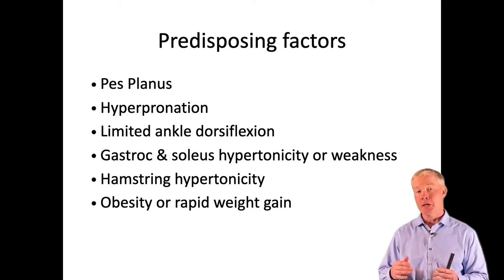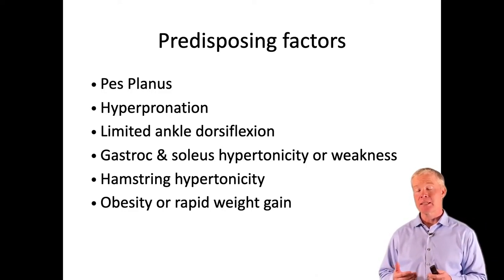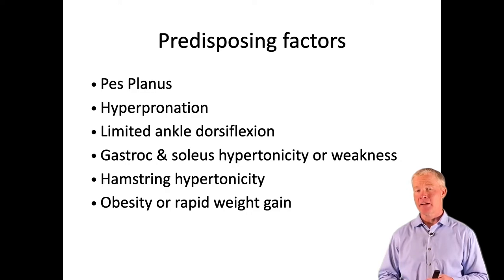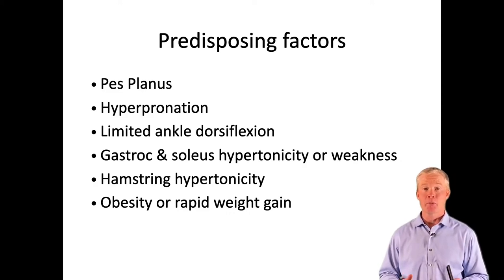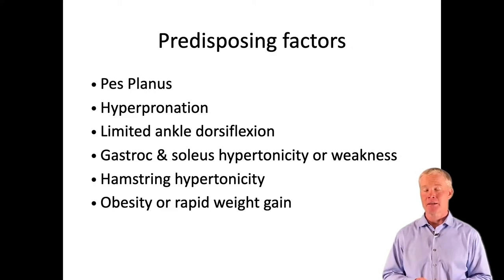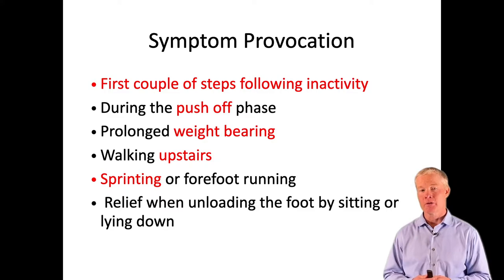Hamstring hypertonicity is another predisposing factor, not only for plantar fasciitis but for many conditions in the lower chain. Certainly, carrying more weight than one should is a problem. If that weight is put on quickly, it's an even bigger problem because those tissues and muscles haven't had the ability to adapt and compensate — there was no ramp-up time and the patient overloaded those tissues.